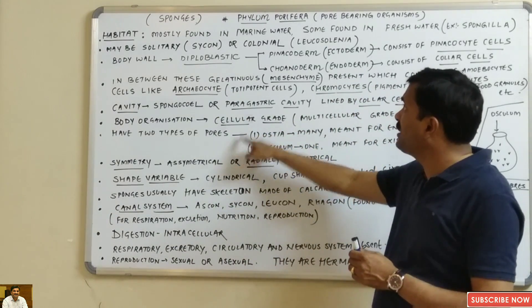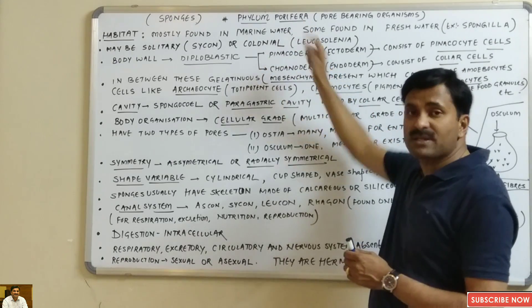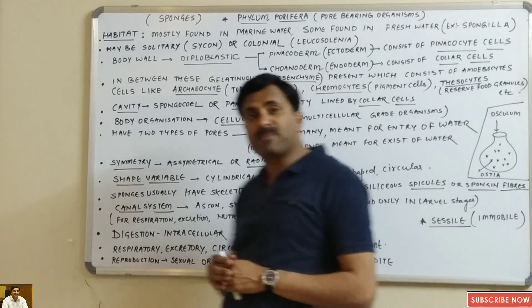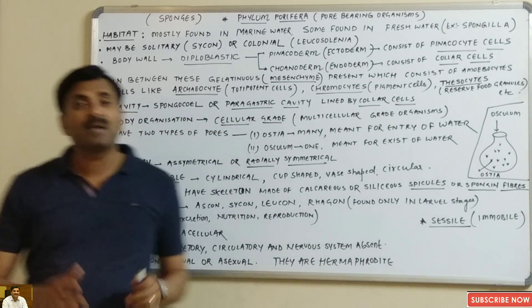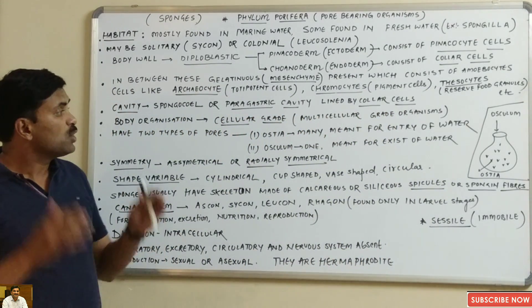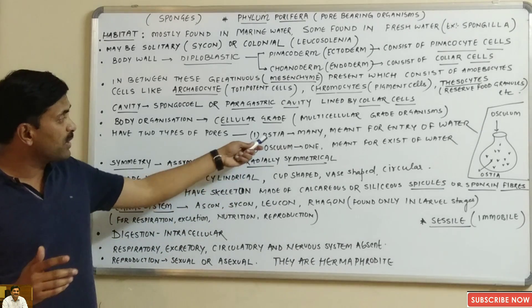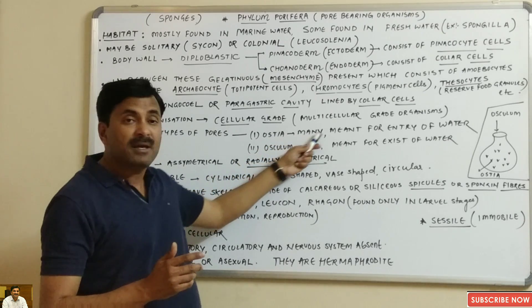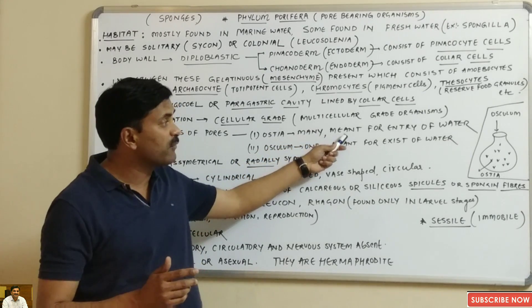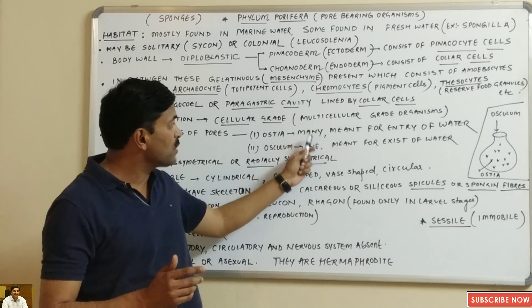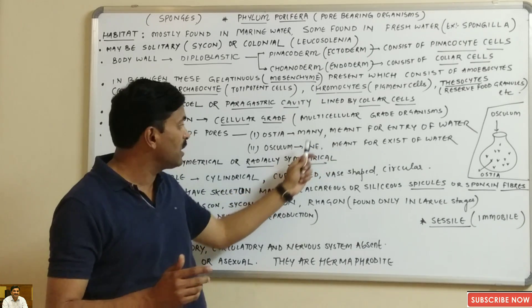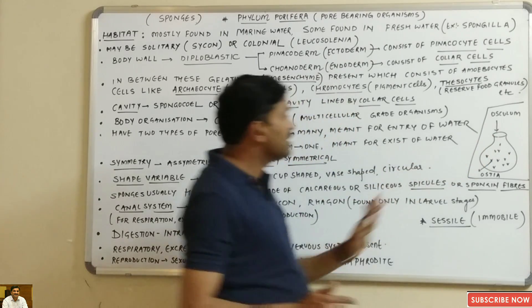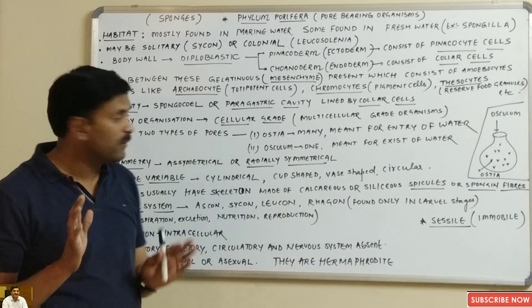As mentioned, porifers are pore-bearing organisms, so they consist of two types of pores. One is known as ostia and the other is known as osculum. Ostia are many in number and are meant for the entry of water, while osculum is one and is meant for the exit of water.